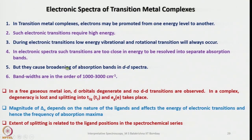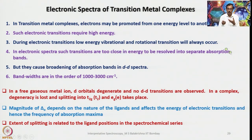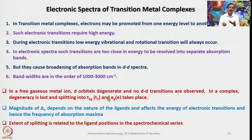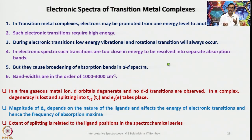In a free gaseous metal ion, d orbitals are degenerate and no d-d transitions are observed. In a complex, degeneracy is lost due to splitting and mixing with s and p orbitals, so d-d transitions become allowed, though strictly they are Laporte forbidden. The magnitude of Δ_o depends on the nature of the ligands and metals, their position (3d, 4d, or 5d), the charge on them, and the ligand's position in the spectrochemical series due to their donor and acceptor properties.